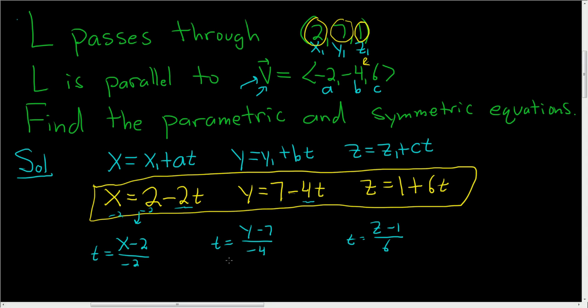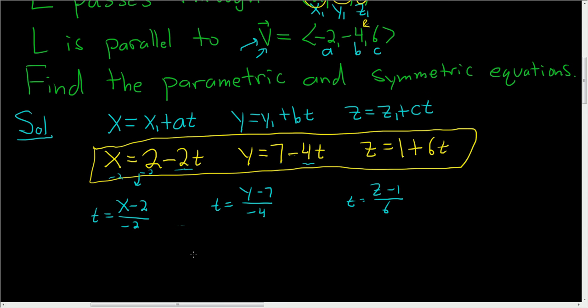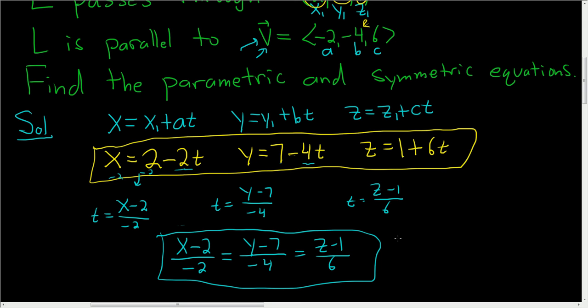So these are called symmetric equations. And notice they're all equal to T, so therefore they're all the same. So X minus 2 over negative 2 is equal to Y minus 7 over negative 4, and this is equal to Z minus 1 over 6. And so these are the symmetric equations. I hope that made sense.